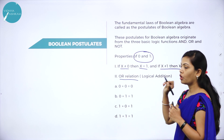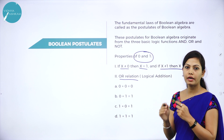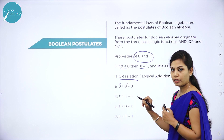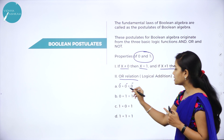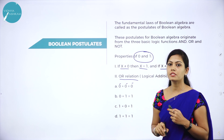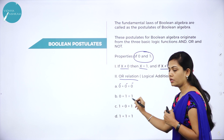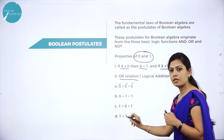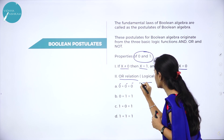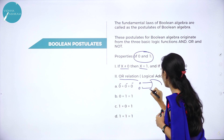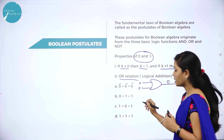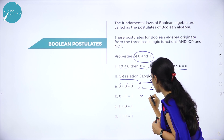Next, we have the OR relation, which means logical addition. 0 plus 0 is equal to 0. We have two input values and only one output value. 0 plus 1 is equal to 1. 1 plus 0 is equal to 1. 1 plus 1 is equal to 1. The logical symbol for OR operation shows that with inputs 0 and 0 we get output 0, and with inputs 0 and 1 we get 1.